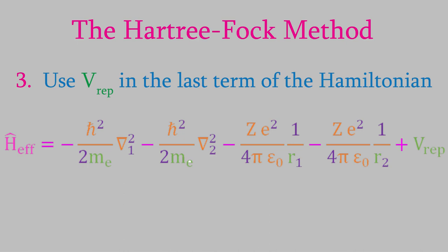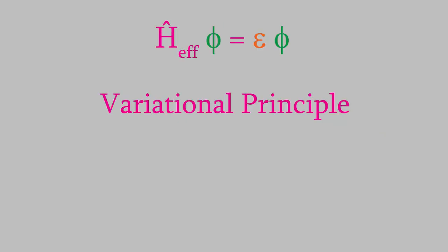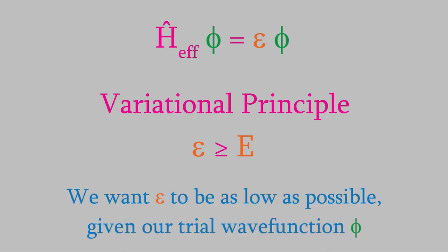Now that we have that, we can use this modified Hamiltonian to solve the Schrödinger equation. Here's a shorthand way of writing the Schrödinger equation. We have phi for the trial wave function, and the energy is represented using the Greek symbol epsilon. We use epsilon instead of E for energy to remind us that the energy we're getting is an approximate energy, not the true energy of the system. We make use of the variational principle, which says that the energy we get by using a trial wave function is always greater than the energy we'd get using the true wave function. Our energy will be as close as we can get to the true value if we find the lowest possible value of epsilon.